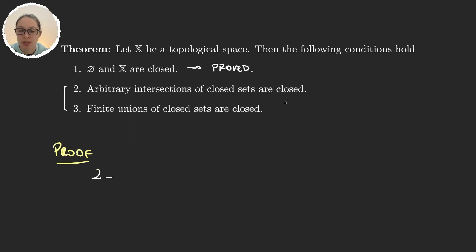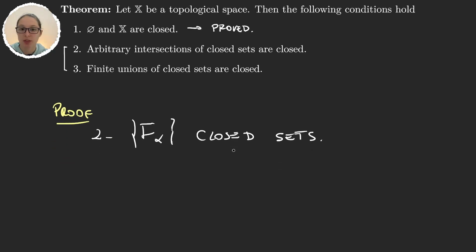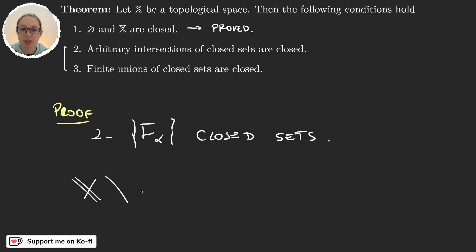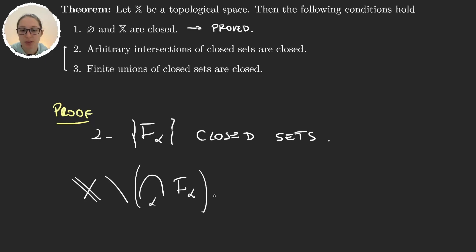Arbitrary intersections of closed sets are closed. For this, let's take f_alpha, just an arbitrary collection of closed sets. We want to see if the intersection of these closed sets is also closed. To prove that a set is closed we know that we have to take the complement, so we will do x minus the intersection — the actual set that we want to prove. Now using De Morgan's law we know that we can write this as the union of the complements.